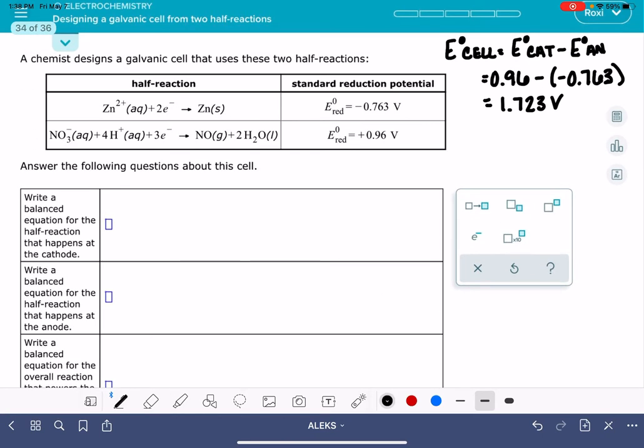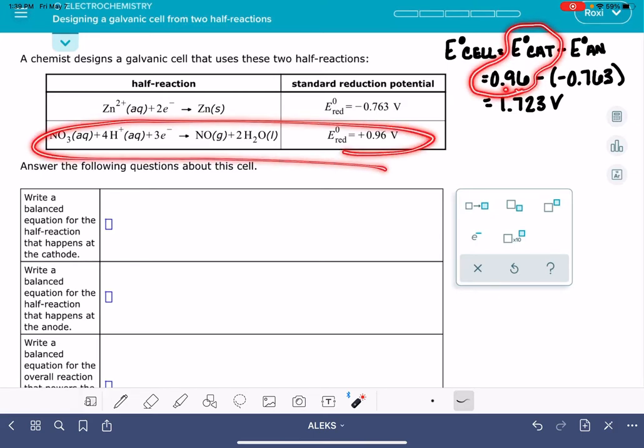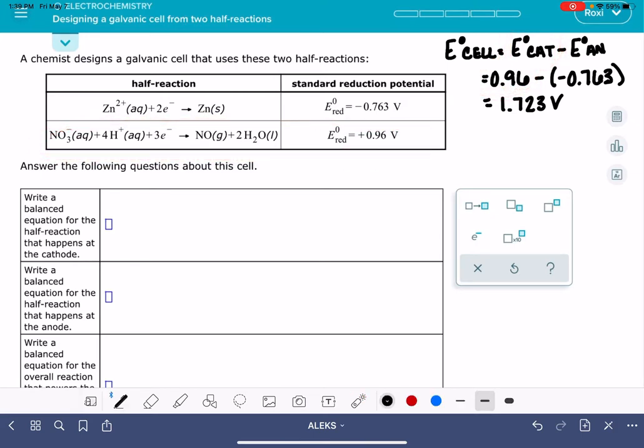Now, why is that the first thing that we should do? Doing this helps us figure out which reaction is taking place at the cathode and which one is taking place at the anode. And honestly, I don't know an easier way to do it. If we get these numbers plugged into this equation in the right order so that we get a positive voltage, that's also letting us know that the reaction with 0.96 volts is the reaction that's taking place at the cathode, and our other reaction with the negative 0.763 volts is the reaction that's taking place at the anode.